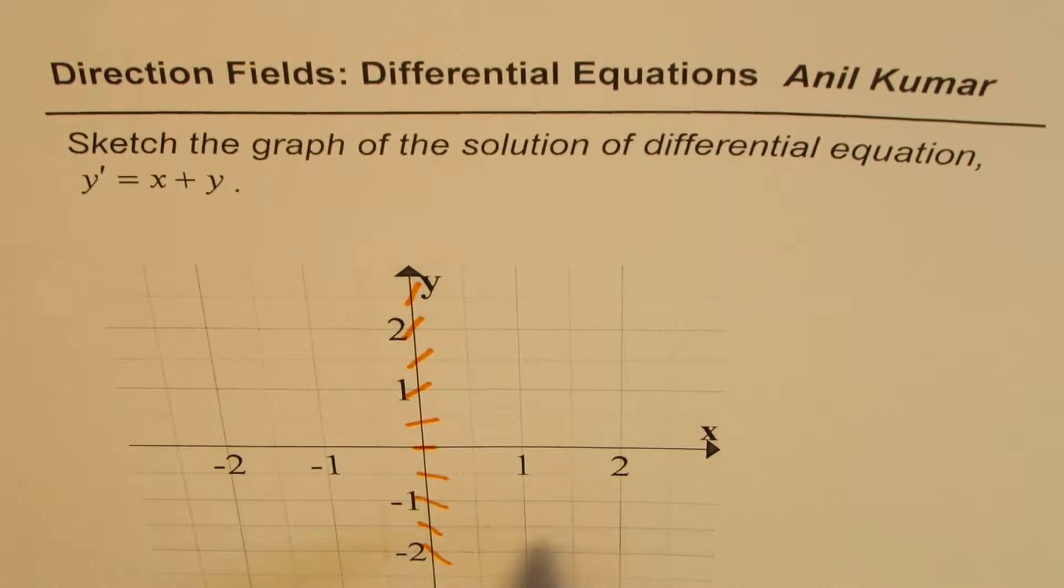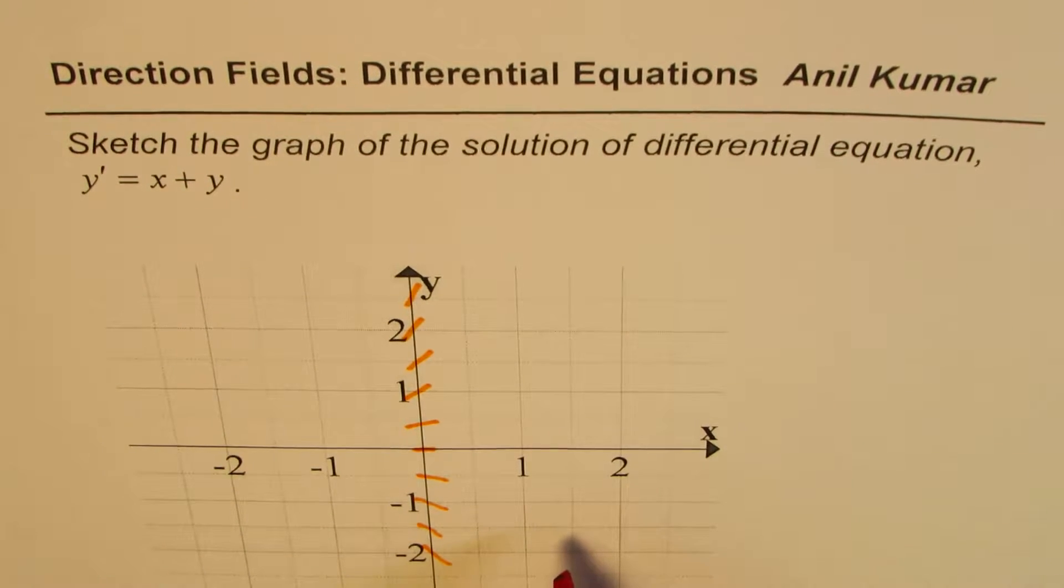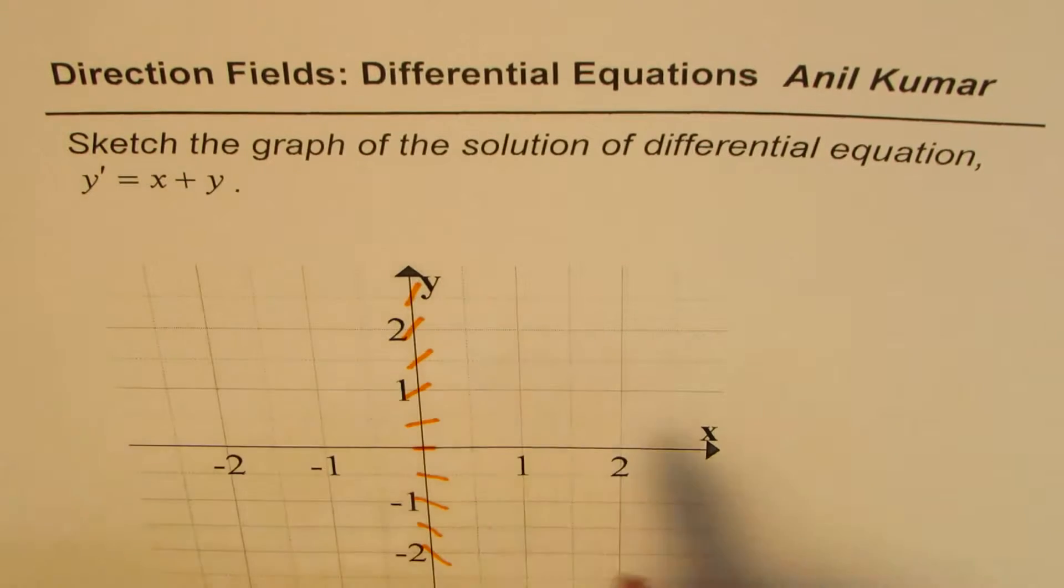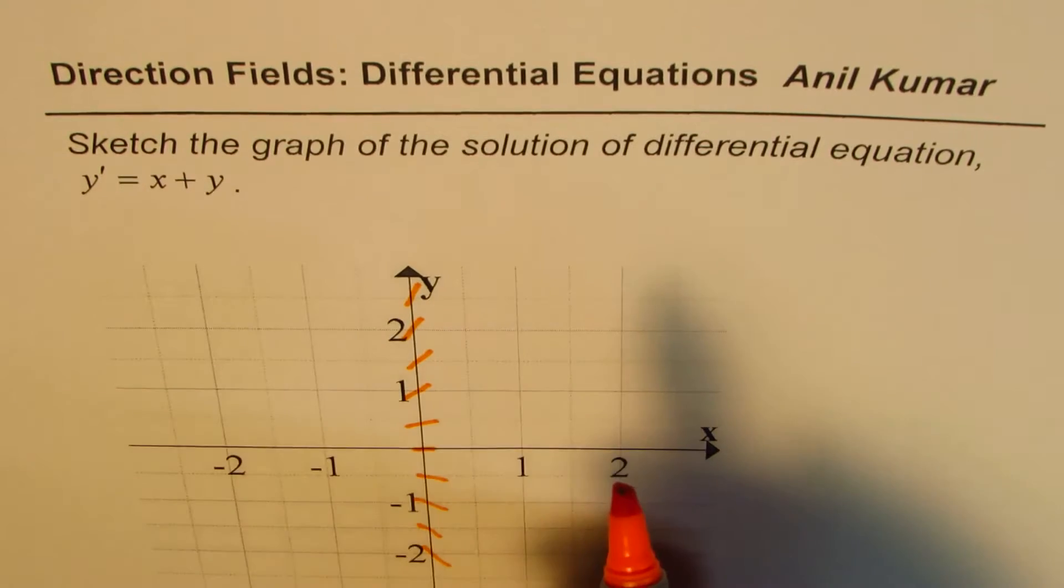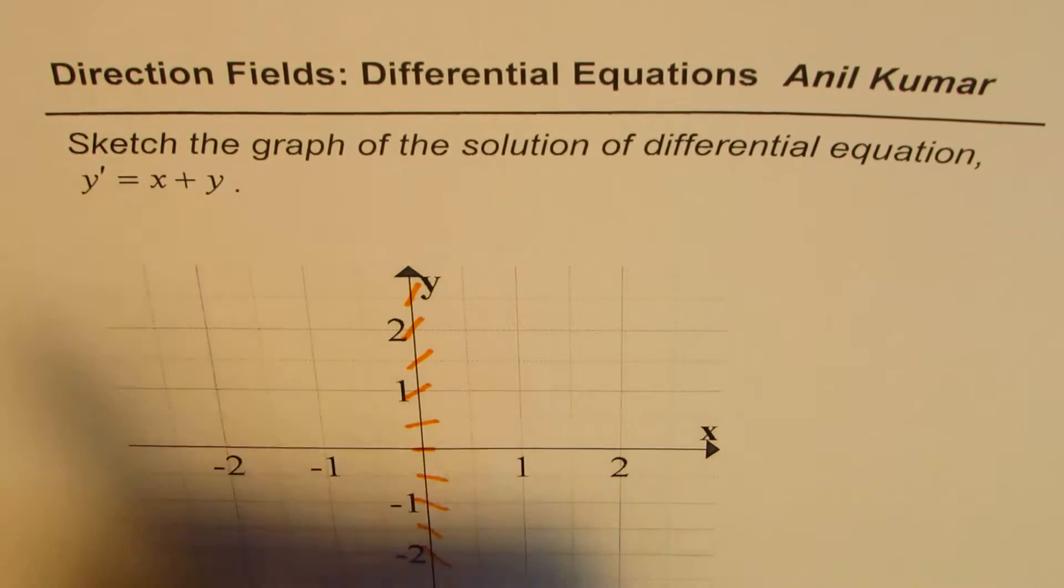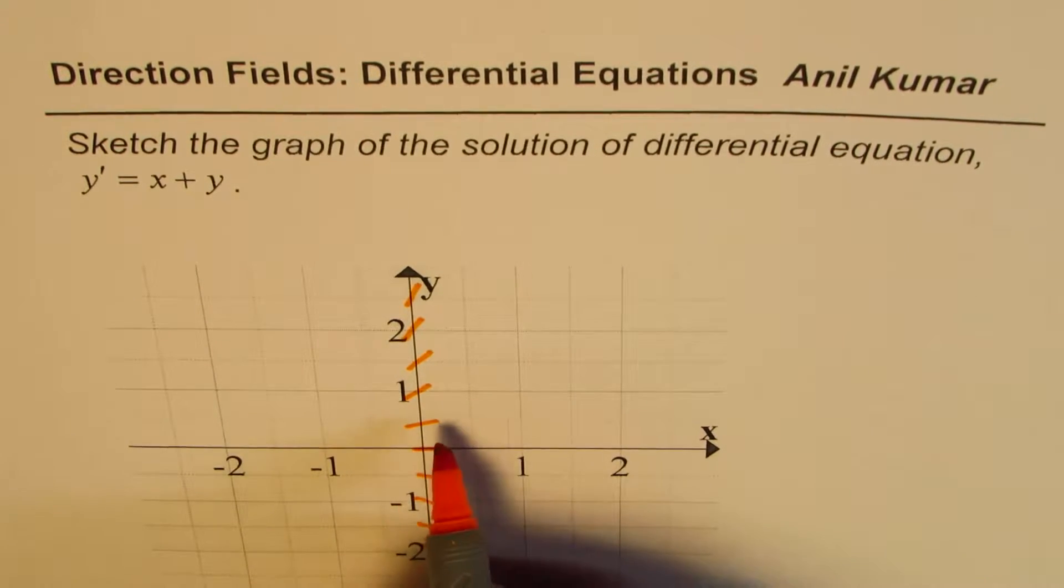So what we can do is we can fill up the whole area just by adding x and y values and keeping that as a slope of the solution. That's the equation. That's how you read this equation. So let me draw a few more.